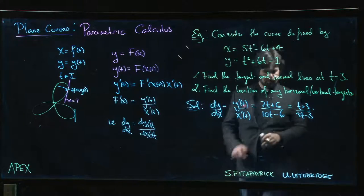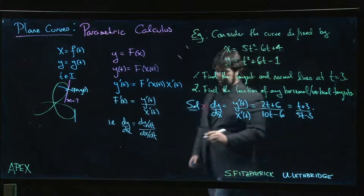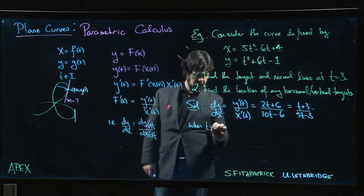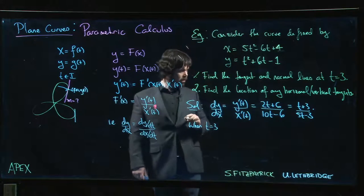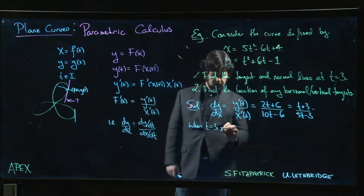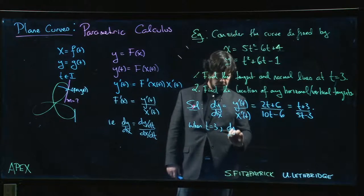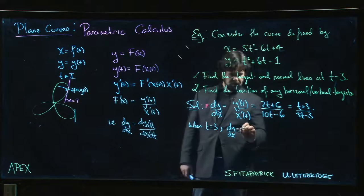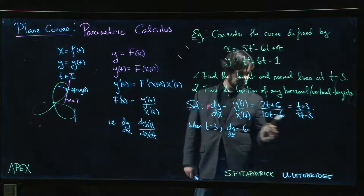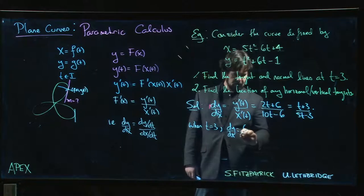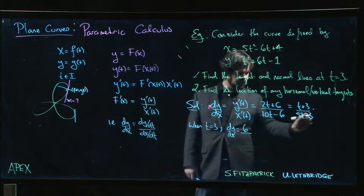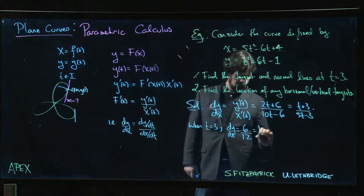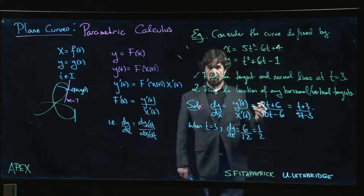Alright, so when t is equal to 3, we get that dy/dx is equal to 3 plus 3, which is 6. 5 times 3 is 15, 15 minus 3 gives me 12. 6 over 12, so I get 1/2. So a slope of 1/2.